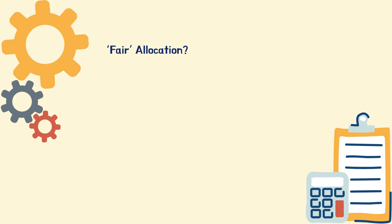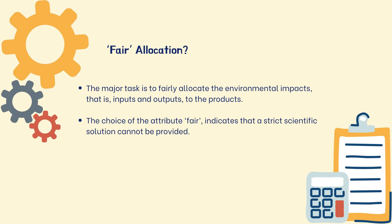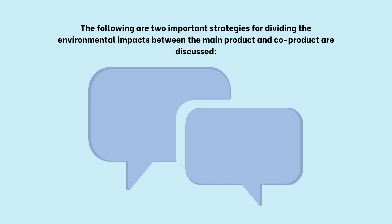Fair allocation: in many processes where more than one product is produced, it is necessary to divide the environmental impacts between the products. The major task is to fairly allocate the environmental impacts—inputs and outputs—to products A, B, and so on. The word 'fair' indicates that a strict scientific solution cannot be provided. In economics, the problem of allocation is well known concerning the fair distribution of costs to individual products, where costs for individual products must be derived from total costs.